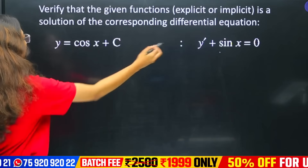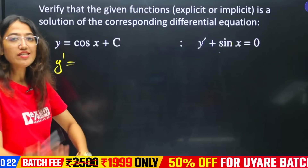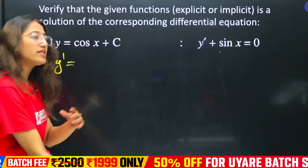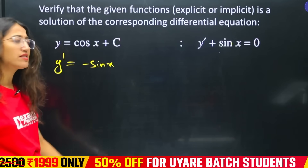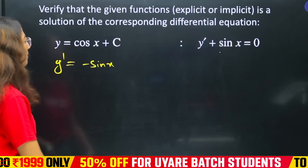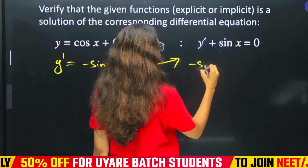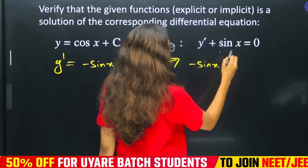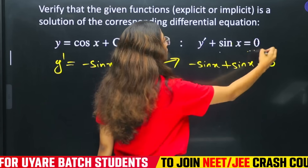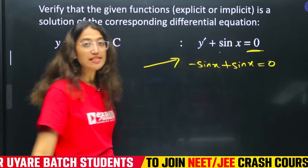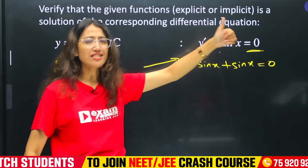Now, if y = cosx + c, then y' = -sinx. Substituting into y' + sinx = 0 gives: -sinx + sinx = 0. This confirms the solution is verified. So y = cosx + c is indeed the solution of y' + sinx = 0.